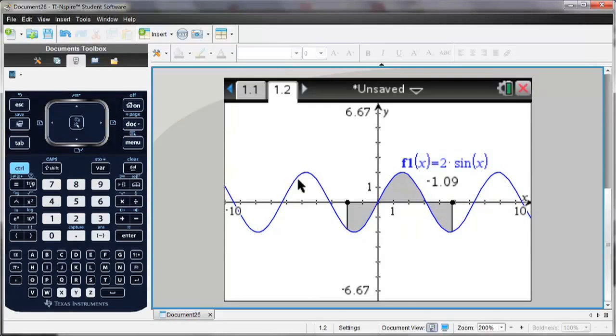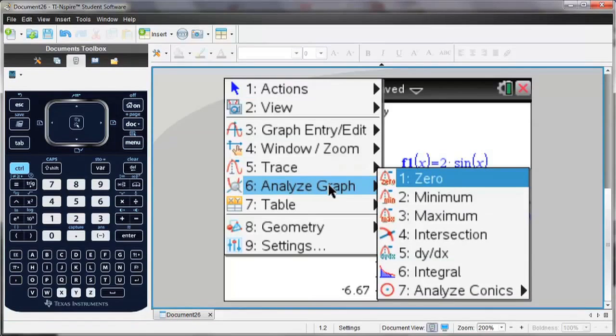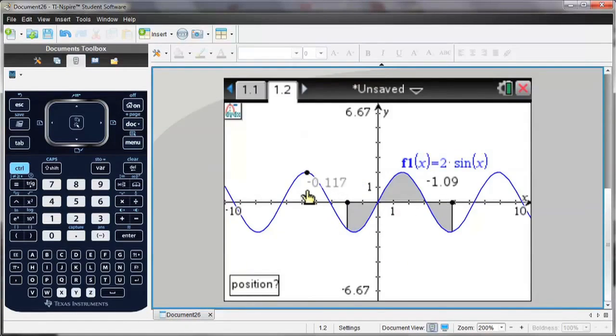I could also find the derivative at certain points on this graph. Select menu, analyze graph, dy/dx, and then select a point anywhere along the graph. And the number you see here is the value of dy/dx at this point.